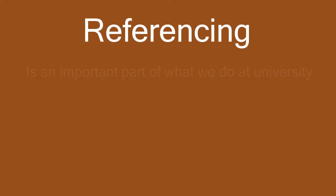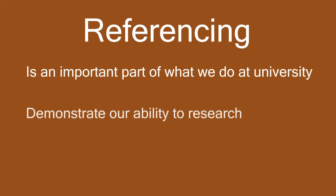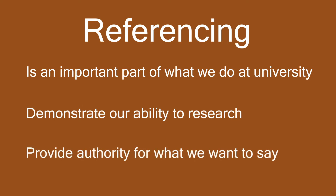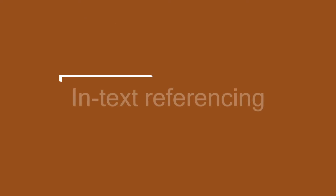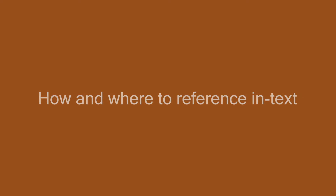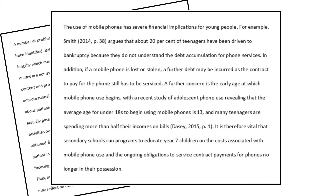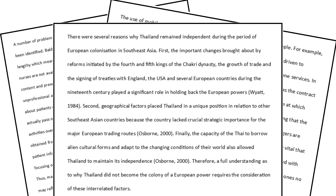Referencing is an important part of what we do at university. We reference to demonstrate our ability to research and provide authority for what we want to say in our work, because others — usually experts in the field — are saying it too. In this video we are going to look at in-text referencing. We will show you how and where to reference in each paragraph of an essay. Remember that all academic writing must contain references from sources that provide expert information to support your argument.